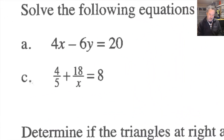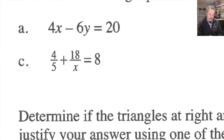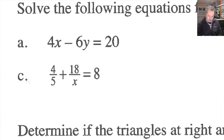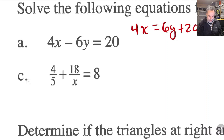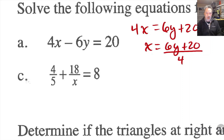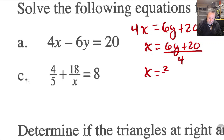Question: solve the following equations for x. For part A, I'm going to add 6y to both sides, giving 4x equals 6y plus 20. So x equals (6y plus 20) divided by 4. I can also divide each term by 4, giving x equals two-thirds times y plus 5. That's my answer for A.